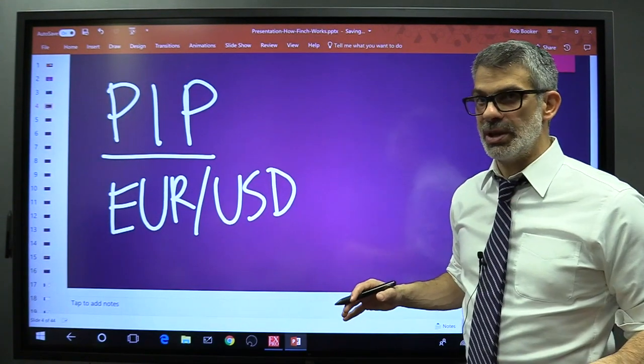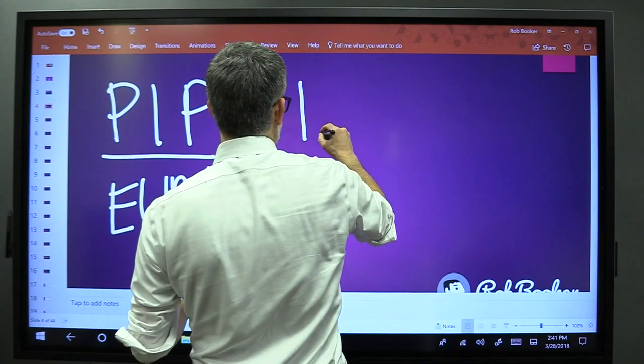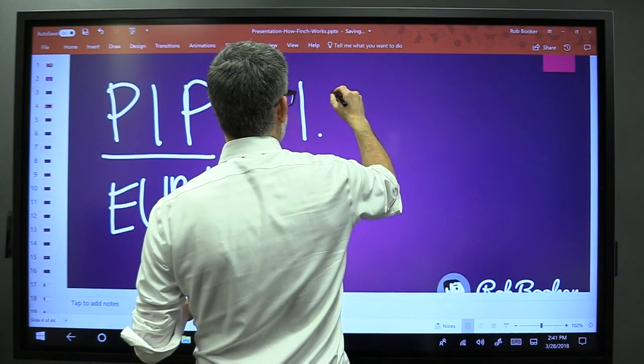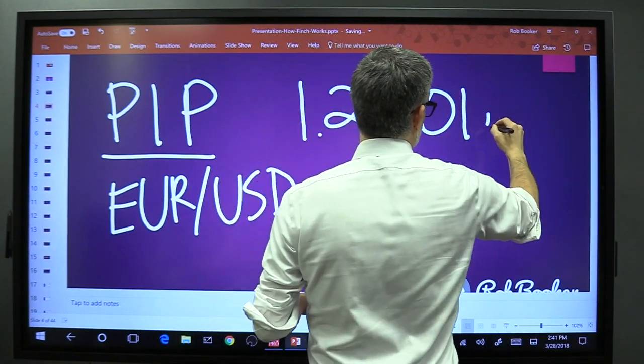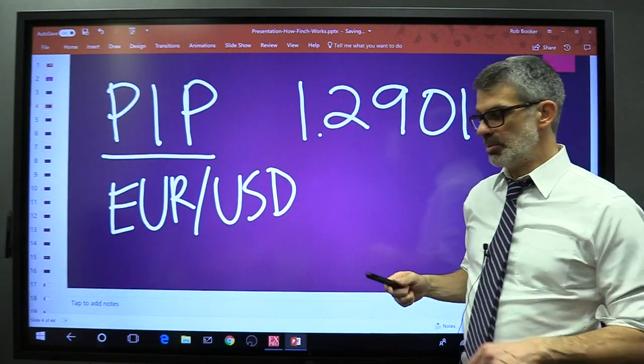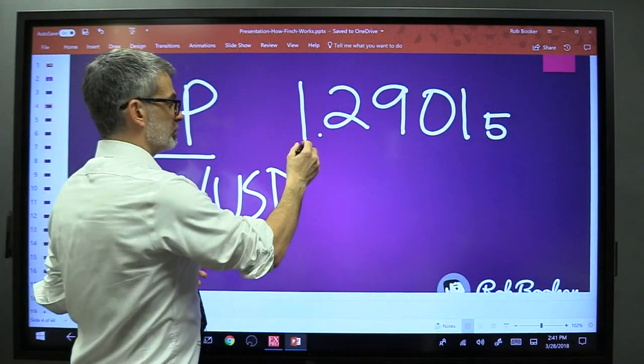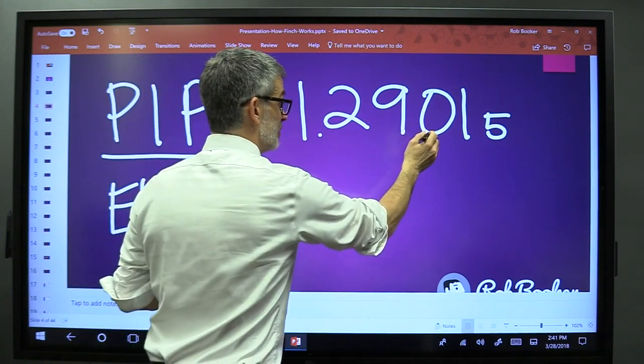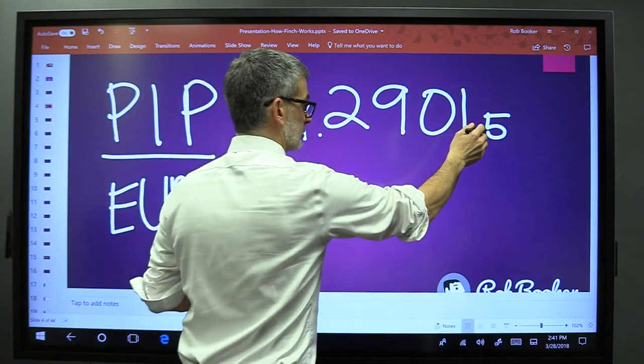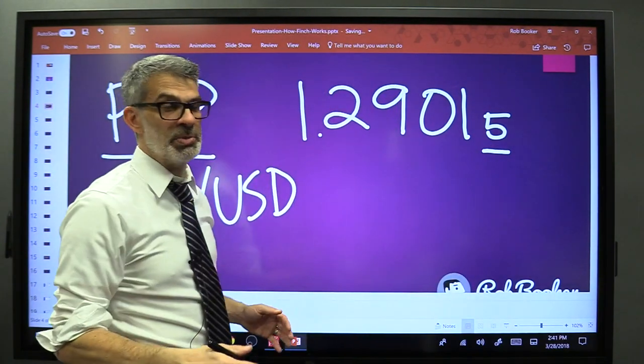What you will see inside of your FX dealer's platform is a quote and it will look something like this. For example, I'm going to move over here so this is a little bit easier to see. It will look something like this: 1.29015, the five is purposefully smaller. I did that on purpose.